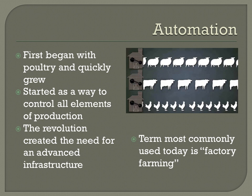Starting during the mid-20th century, poultry became automated. The group quickly evolved to include all main meat bird species, including ducks and turkeys, and was rapidly embraced by the pig industry.